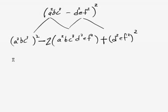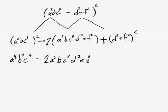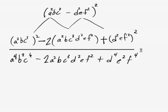So you're going to get a^4b²c^6, minus two times all this. So this is going to be a²bc³d²ef². Plus d^4e²f^4. And that would be your final answer.